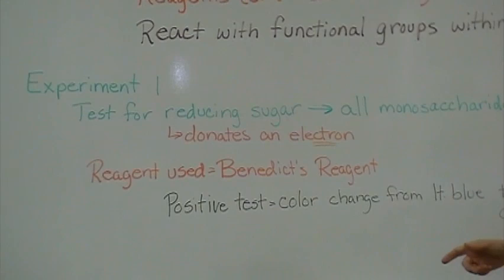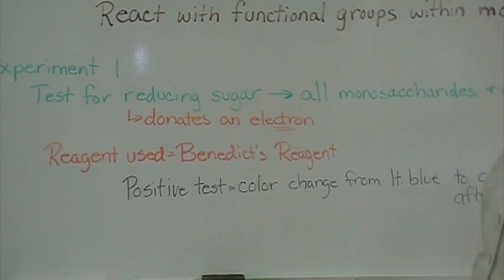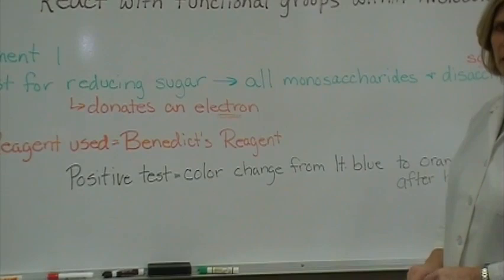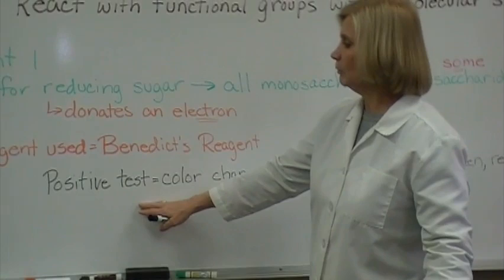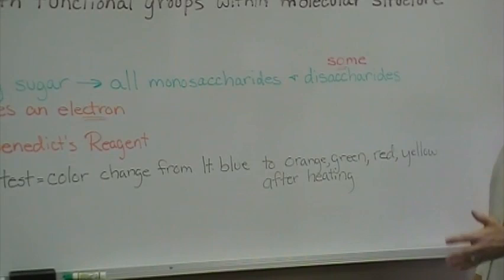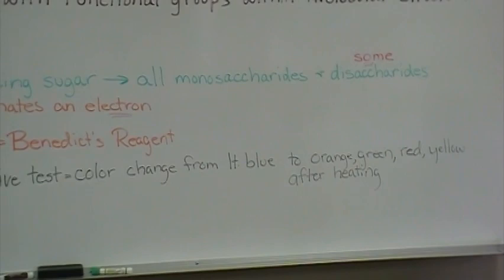The reagent that we'll use for this experiment is called Benedict's reagent or Benedict's solution. Benedict's is the man that came up with this combination of chemicals to allow this color change. A positive test which is what we'll be testing for involves a color change from light blue to an orange, a green, possibly red, and some yellow after it's heated.